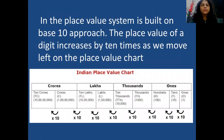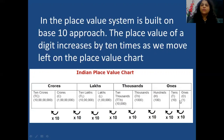Now coming to the place value system. The Indian place value system is based on a base 10 approach. The place value of a number increases by 10 times as we move from left on the place value chart. For example, from 1s to 10s: 1, 10, 100, 1000, 10,000, lakh, 10 lakh, crore, and 10 crore — so it's multiplying by 10 every time we shift from one place to the next.